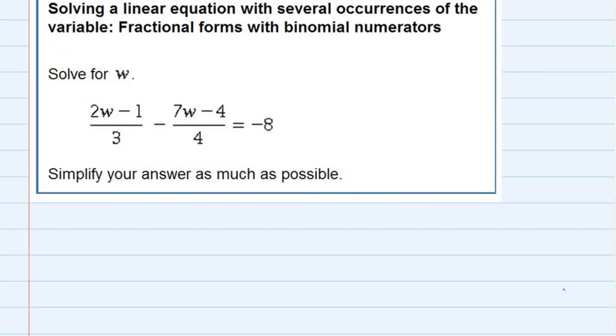Solving a linear equation with several occurrences of the variable, fractional forms with binomial numerators. We're asked to solve for w, and this looks kind of complicated because of those fractions. But our plan is to get rid of those first by locating the LCD, the lowest common denominator for my fractions.